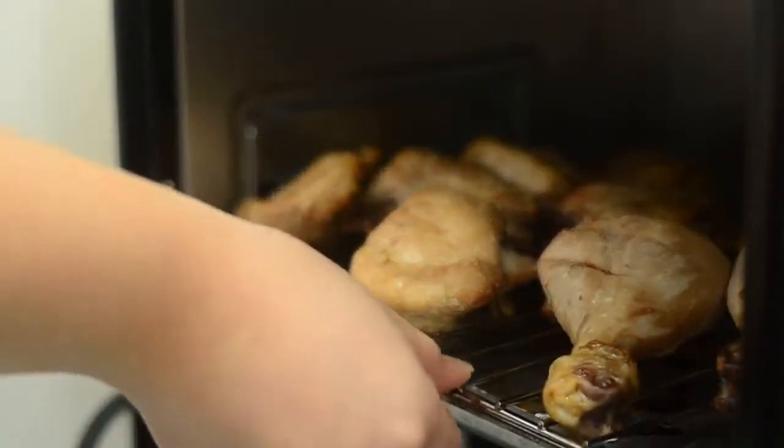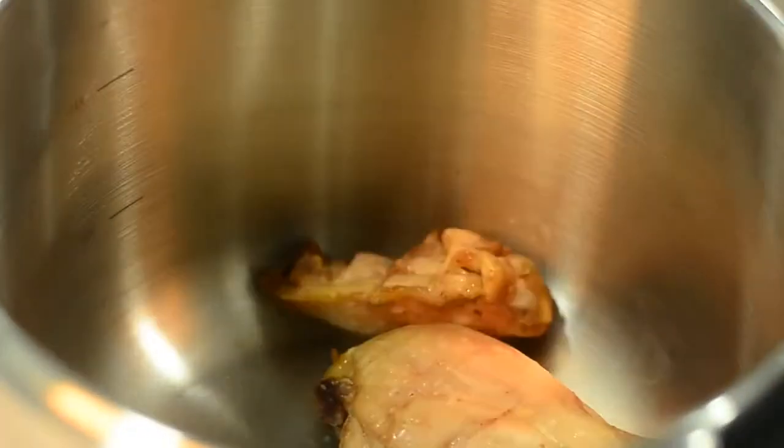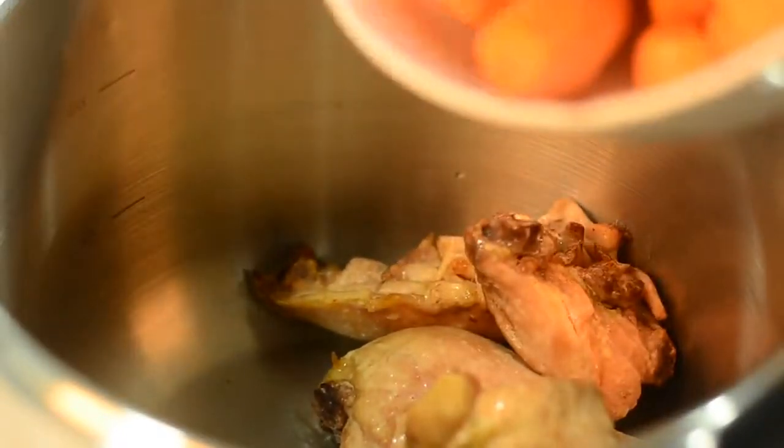Then let the chicken cook in the oven at 350 degrees Celsius for about 15 minutes until golden brown. Once ready, transfer the chicken to the pressure cooker.